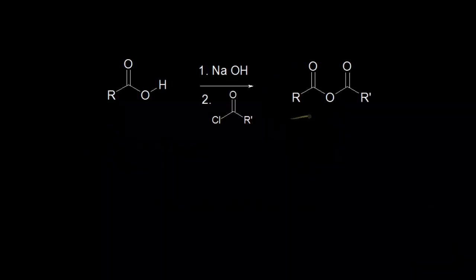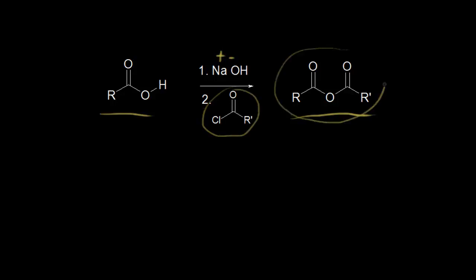Here's another carboxylic acid derivative — an acid anhydride. We can form those from carboxylic acids. If we start with a carboxylic acid, our first step is to add a base like sodium hydroxide, and our second step is to add an acyl chloride, then we'd form our acid anhydride as our product.